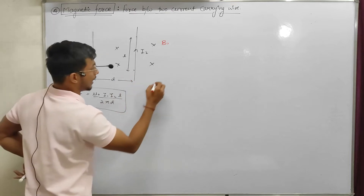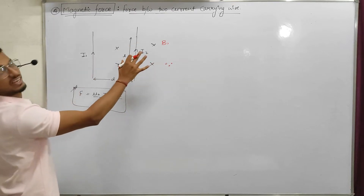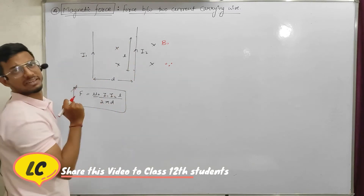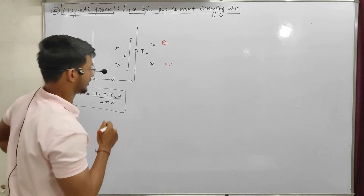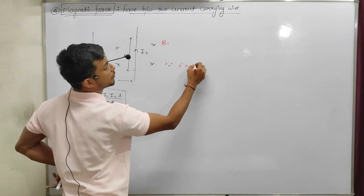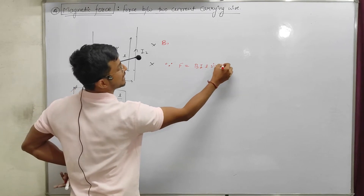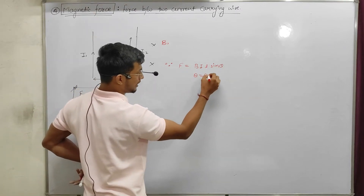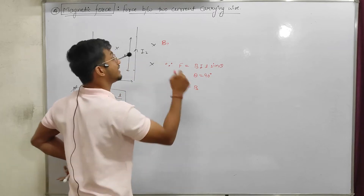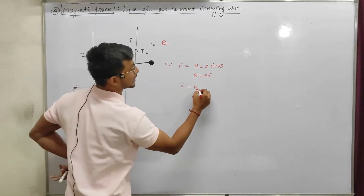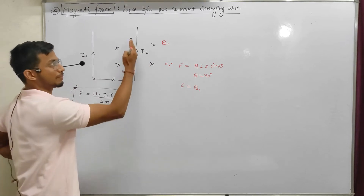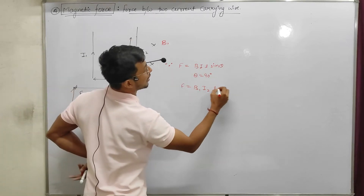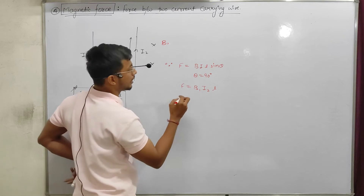Since wire 2 is a current-carrying wire placed in the magnetic field of wire 1, it will experience a force. The force is equal to B·I·L·sinθ. Here, B is B1, current is I2, length is L, and sinθ = sin90° = 1. So the force is F = B1 · I2 · L.